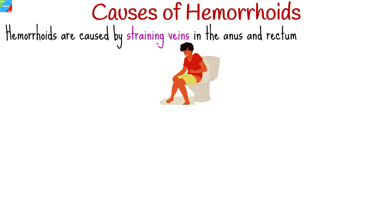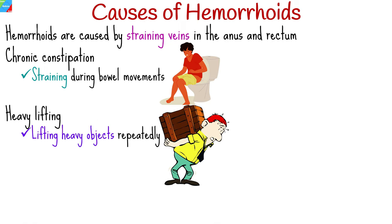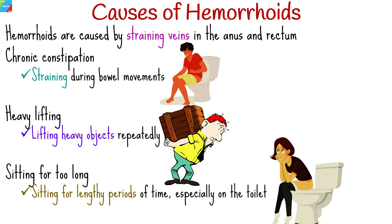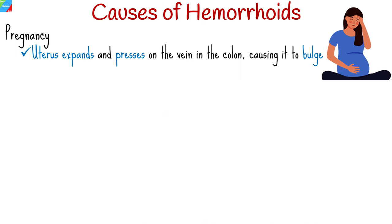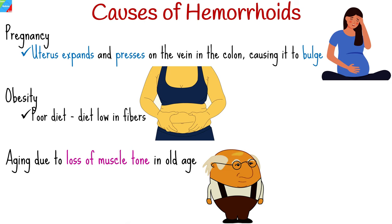Hemorrhoids are caused by straining veins in the anus and rectum. Anal and rectal veins may become enlarged and irritated from straining that increases pressure on the belly or lower extremity. Factors causing increased pressure include: chronic constipation and straining during bowel movements, heavy lifting, sitting for too long especially on the toilet, pregnancy — as the expanding uterus presses on the vein in the colon causing it to bulge — obesity from a poor diet low in fiber, aging due to loss of muscle tone, and genetics, as hemorrhoids are a condition some people inherit.